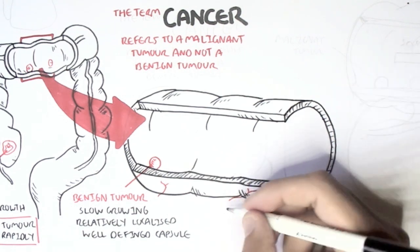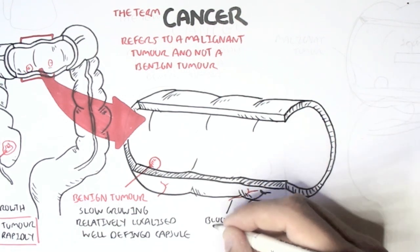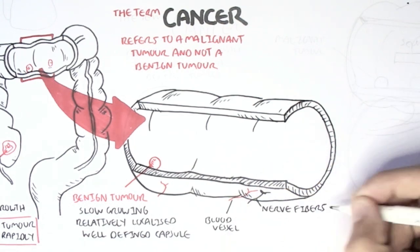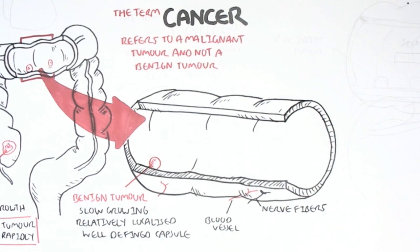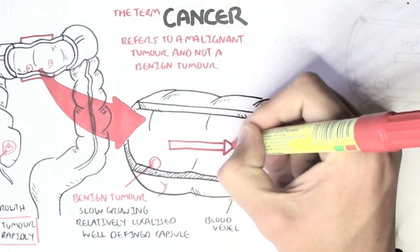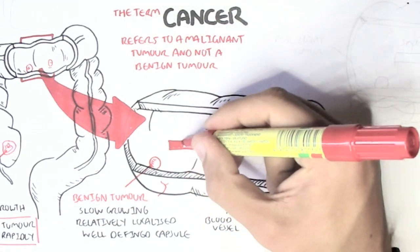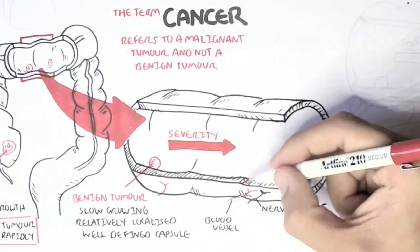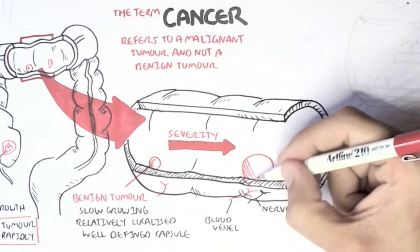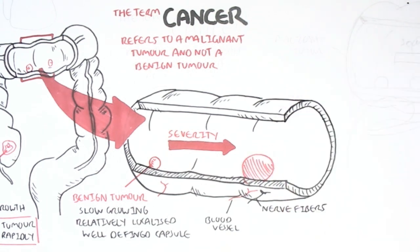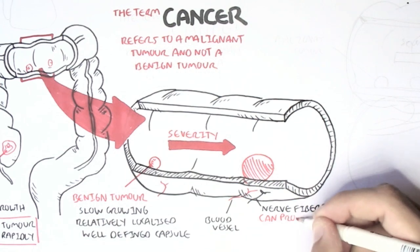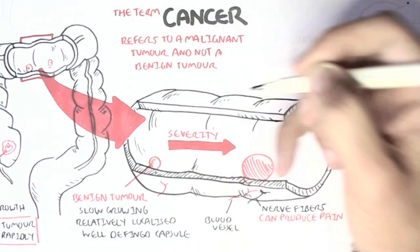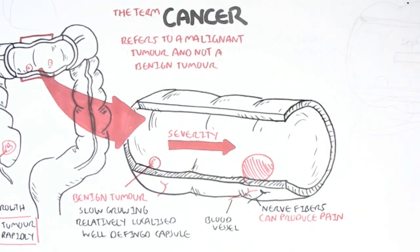The colon naturally has a blood supply and nerve innervation, shown here. A benign tumor is not very dangerous, but as it grows, it can increase in severity because it can start pressing against nerve fibers, for example, and can produce pain. But other than that, benign tumors are not cancerous.